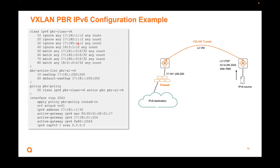IPv6 is very similar. Create your class based on IPv6 addresses. The action list will be based on IPv6 next hops. Link the class and action together, and apply it inbound on the SVI using 'routed in'. So you can manipulate the traffic outbound using this inbound policy.